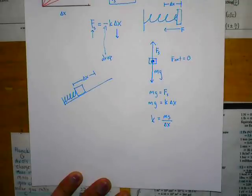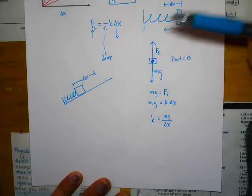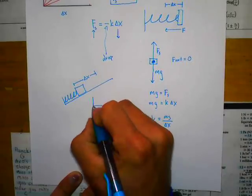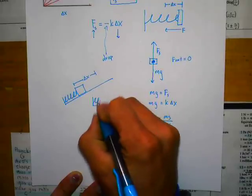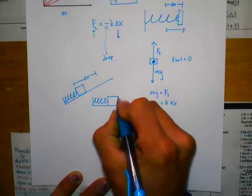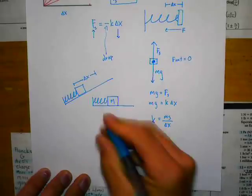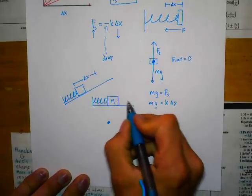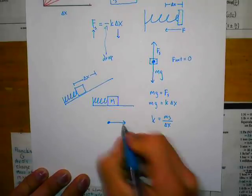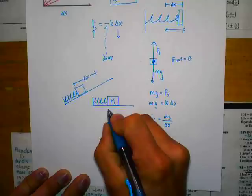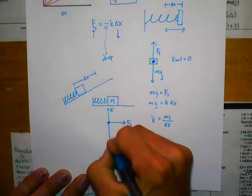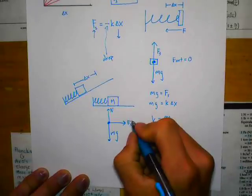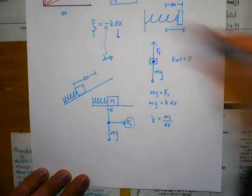We could also have a horizontal situation where we're stretching or compressing a spring. For the FBD of a compressed horizontal spring with a mass: we'd have Fs pointing away from the spring, normal force upward, and mg downward. The surface could be frictionless or have friction. Really, this is just another force we can include on our FBDs.